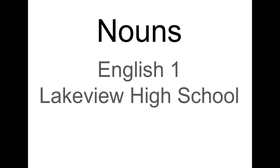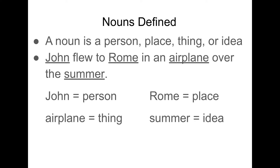This video will cover classifications of nouns and functions of nouns. A noun is a person, place, thing, or idea. For example: John flew to Rome in an airplane over the summer — there is an example of a person, a place, a thing, and an idea.